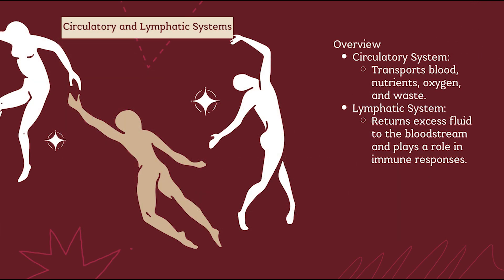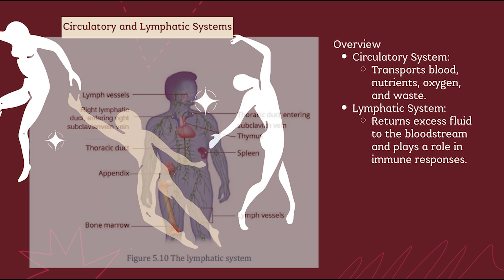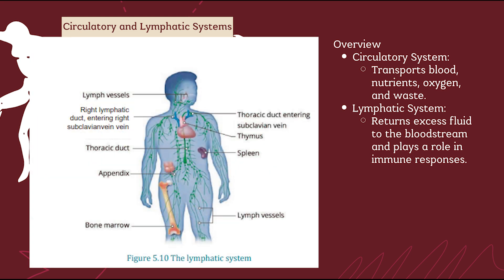Next: the circulatory and lymphatic system — the body's transport system. The circulatory system moves blood, oxygen, nutrients, and waste. The lymphatic system returns extra fluid to the bloodstream and defends the body against pathogens. Together they ensure cells get what they need and stay protected.